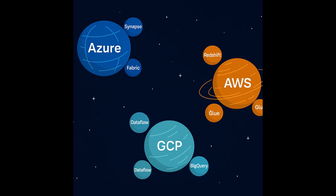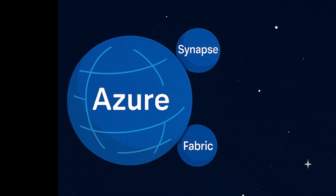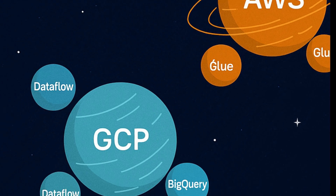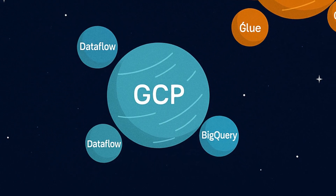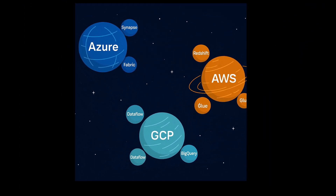All of these tools and systems need somewhere to run, and that is where your cloud platform really shines. You have Azure, which houses your Synapse and Fabric tools along with ADF. You have AWS, with tools like AWS Glue and Redshift. And finally, you have GCP, which holds BigQuery and your data flow. Which one's best? It depends — your team's skills, existing infrastructure, and your budget all play a part in the decision.